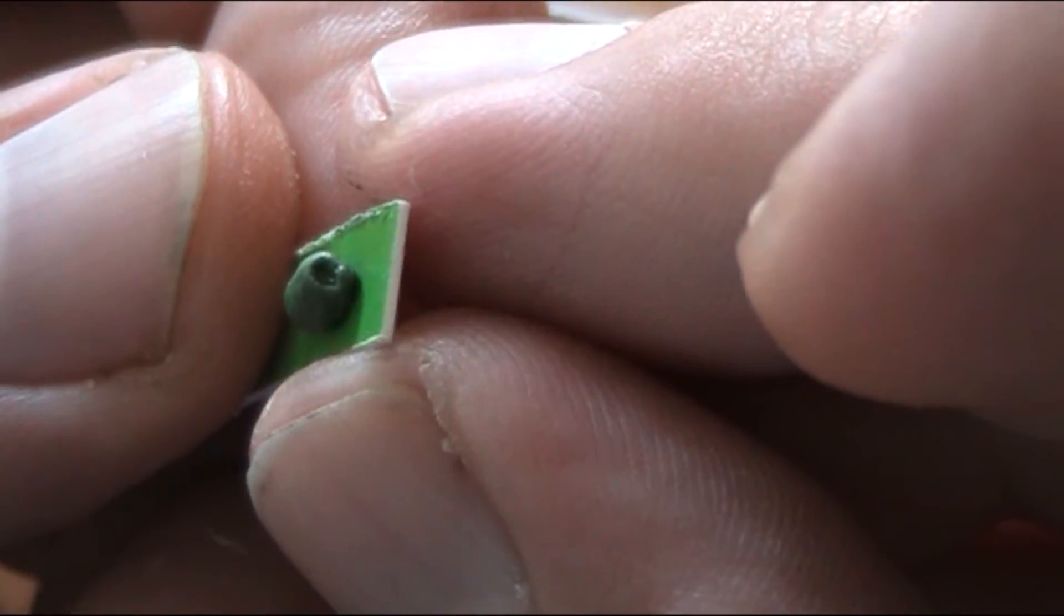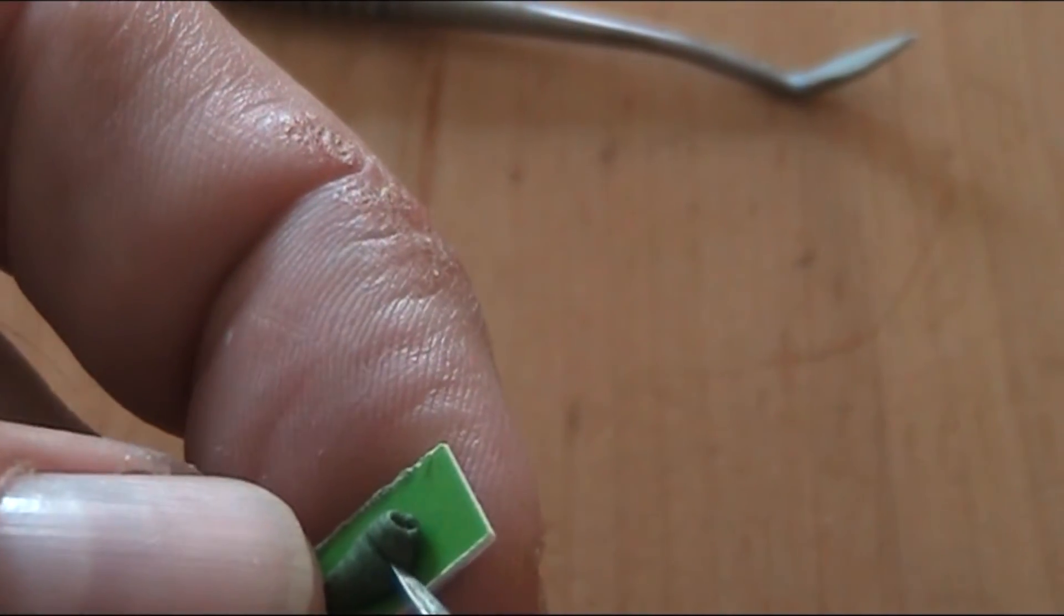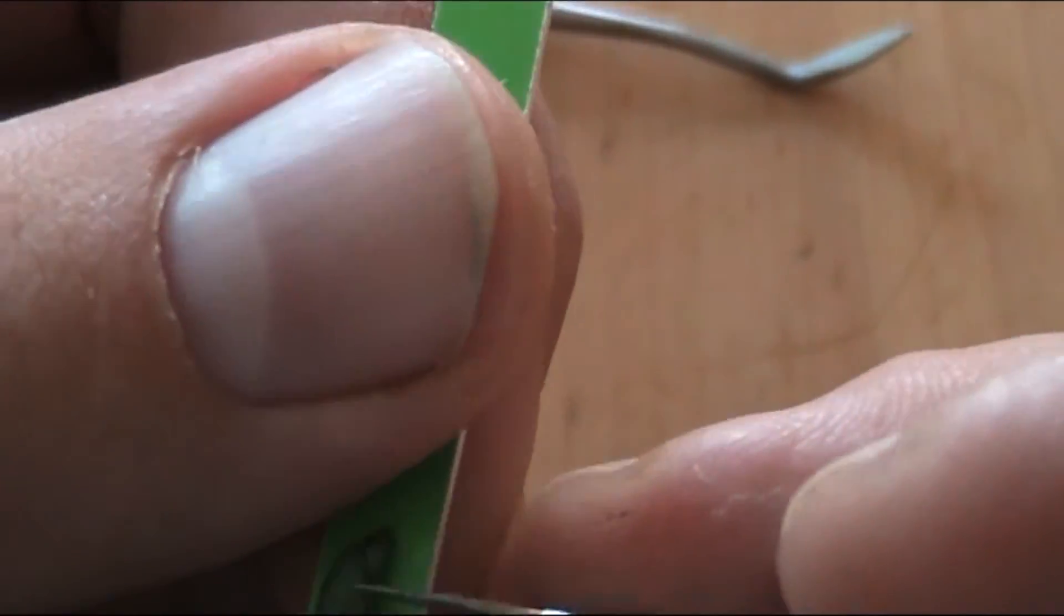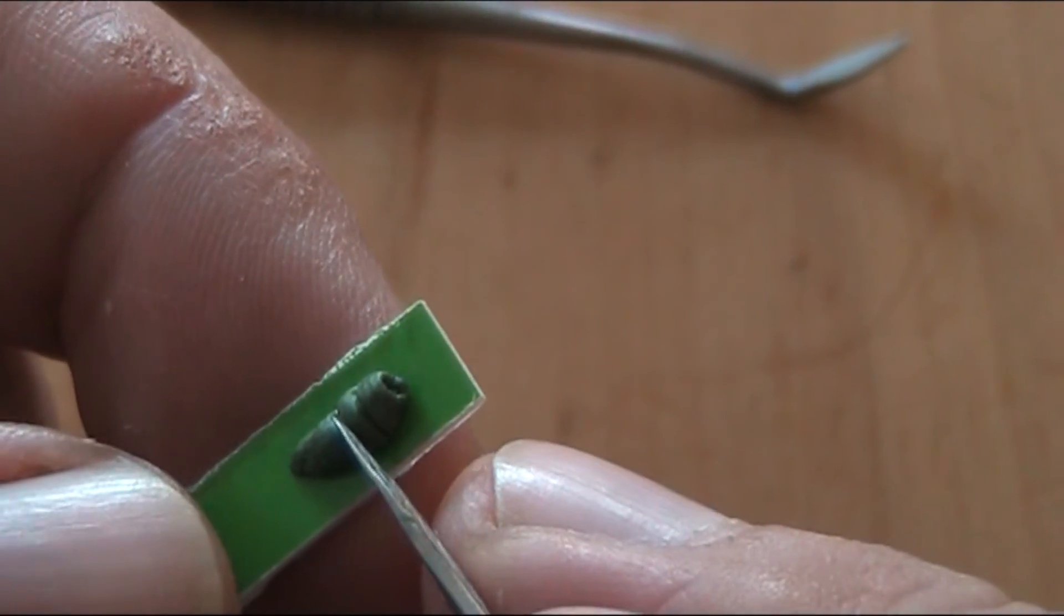When I'm happy with the result, I use the side of my sculpting tool and press it in the green stuff from all sides to make some grooves on the maggot. Do this along the whole body and it should look okay.